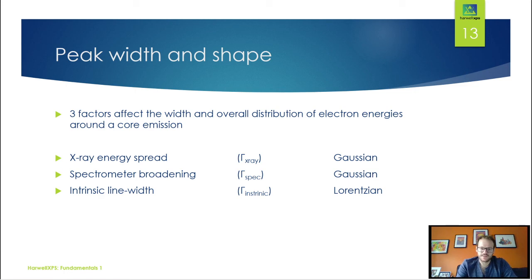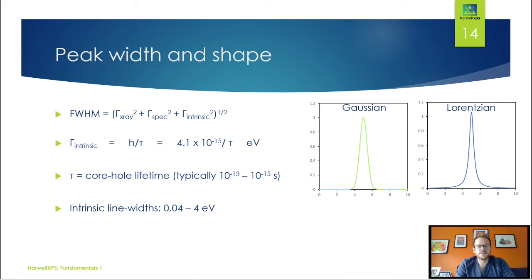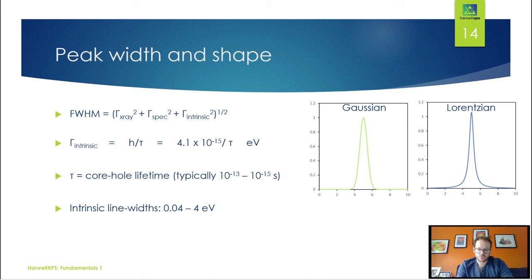Later on in the course we'll go into more detail on how to model these. The full width at half maximum of our resultant peak can be described with the formula shown. The intrinsic line width has a Lorentzian relationship that can be related to the core hole lifetime. We typically have core hole lifetimes around 10⁻¹³ to 10⁻¹⁵ seconds — the shorter the core hole lifetime, the broader the eventual peak. These intrinsic line widths typically give us around 0.04 to 4 eV, depending on the orbital and element in question.